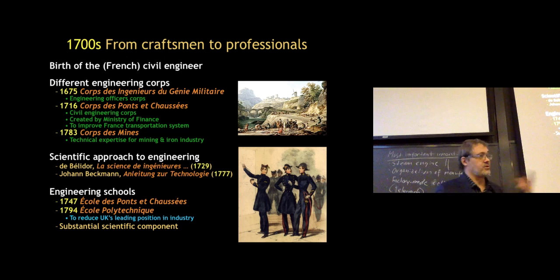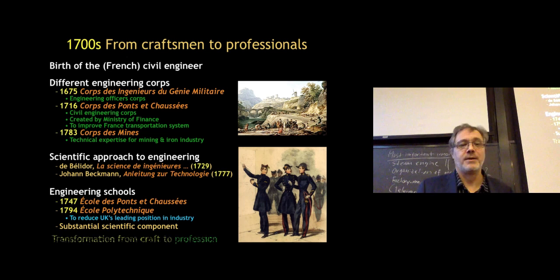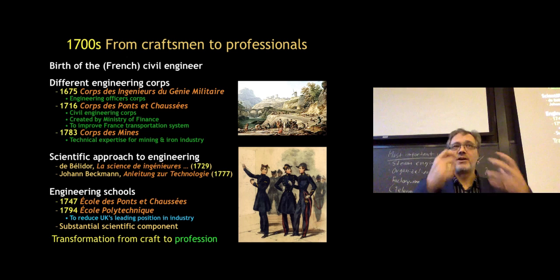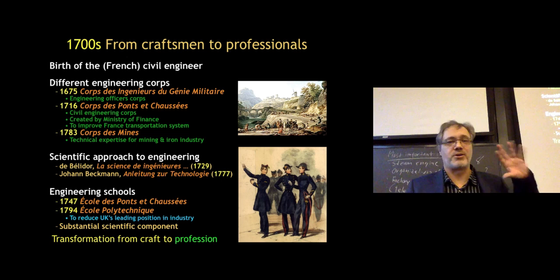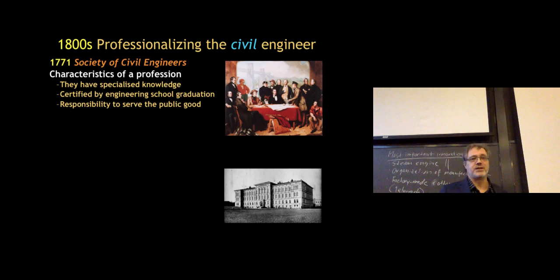Here we see some of the students at the École Polytechnique. Students were trained as engineers, but also as officers — the military connection remained. Importantly, the École Polytechnique had a substantial scientific component in its training, focusing heavily on mathematics, physics, and chemistry, since these were seen as very important for engineering. This represents the transformation of engineering from a craft to a profession — the real professionalization of engineers coming during the 19th century.